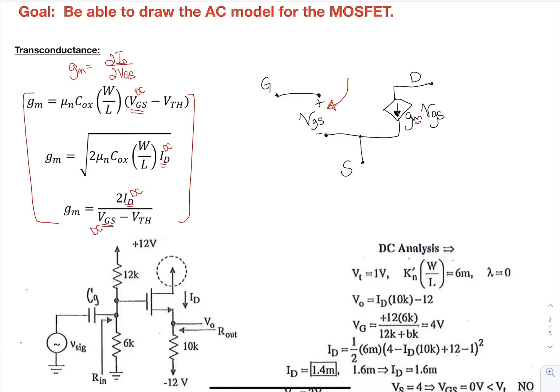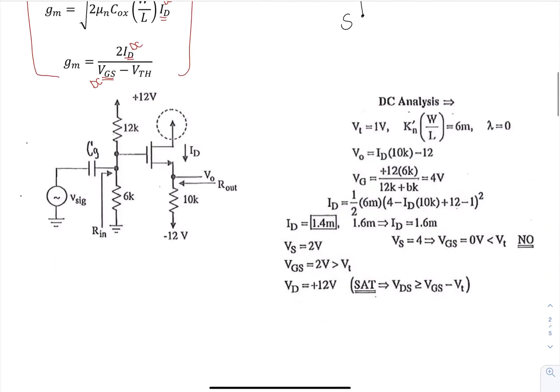We have still the dependence of GM, that transconductance, with the voltage between those two gate and source. So let's look at how to draw this hybrid pi.